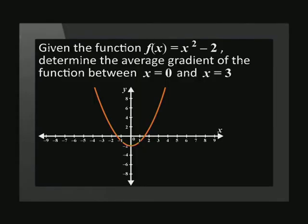Given the function f of x equals x squared minus 2, determine the average gradient of the function between x equals 0 and x equals 3. To calculate the gradient, we need to find y values that correspond with these x values.